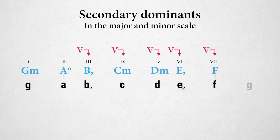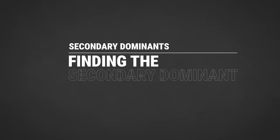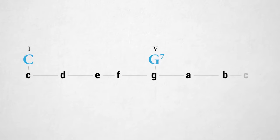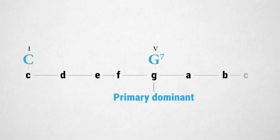In the minor scale, the diminished chord lies on the second degree, so the only chords with secondary dominants in a minor scale are the third, fourth, fifth, sixth, and seventh degree. Taking C major as an example: the fifth degree is a G dominant seventh chord and is the primary dominant for the tonic — that's obvious. Now for the secondary dominants: in the key of C major, we have a D minor chord on the second degree.